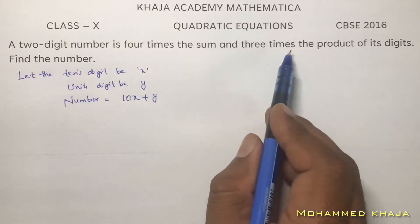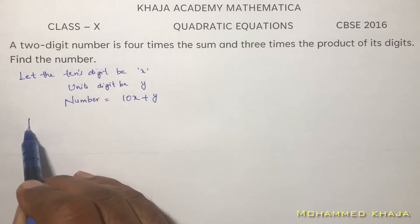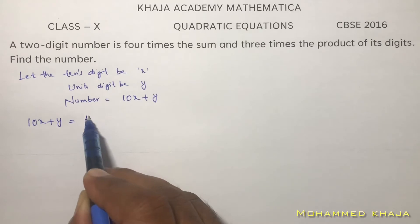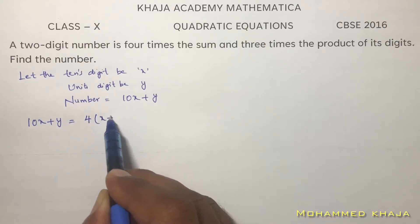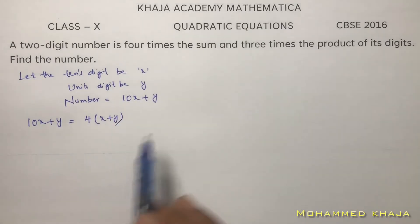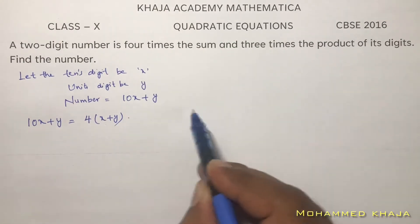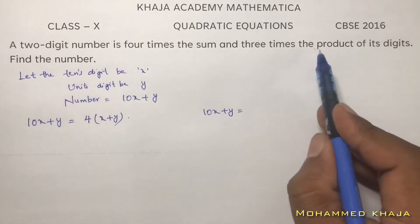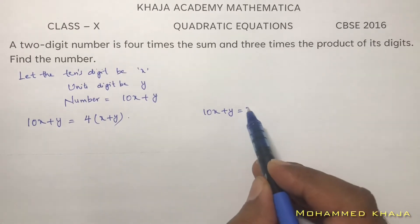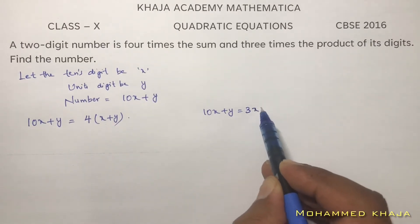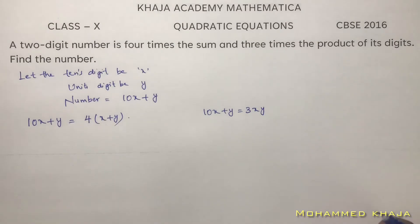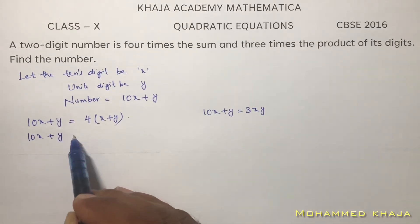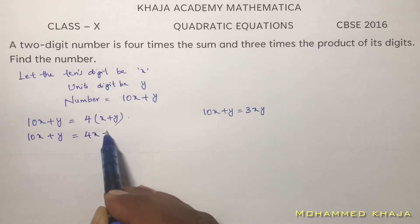Reading the problem: the two-digit number is four times the sum of the digits, so we write 10x plus y equals 4 times (x plus y). And again, the two-digit number is three times the product of the digits, so we write 10x plus y equals 3xy.